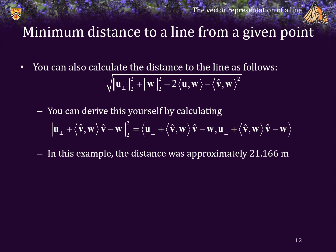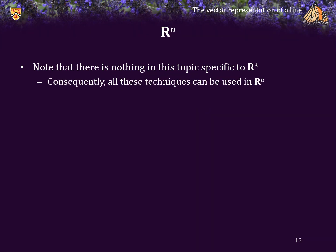The distance from the point (1,1,1) to the line that we found is approximately 21.166 meters. Note there's nothing in this topic that's actually specific to R³, and so consequently, all of these techniques can be used to describe lines in Rⁿ. However, in general, this is often not necessary; this is usually only really applicable, or at least most applicable, in R³.